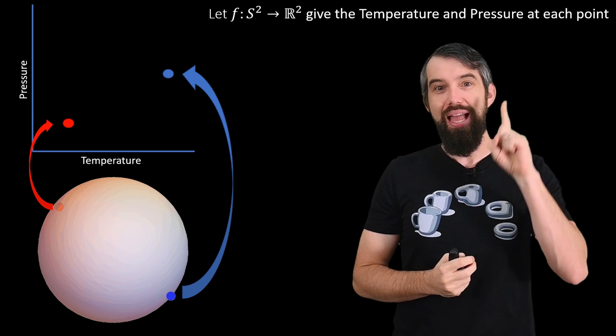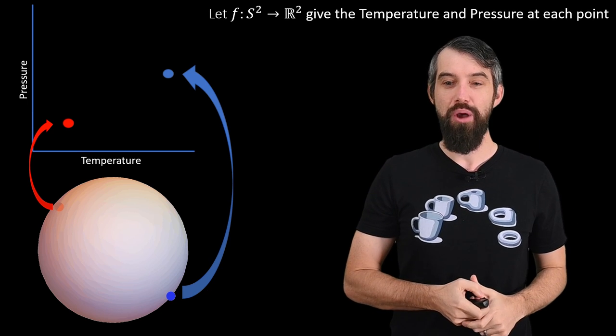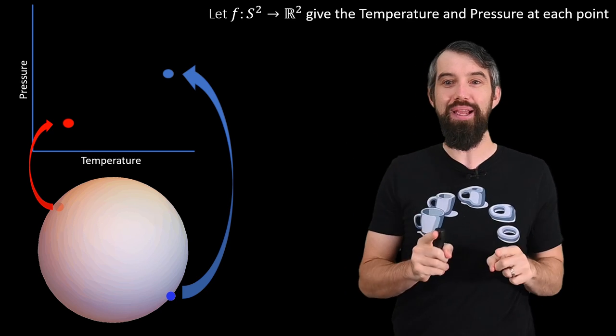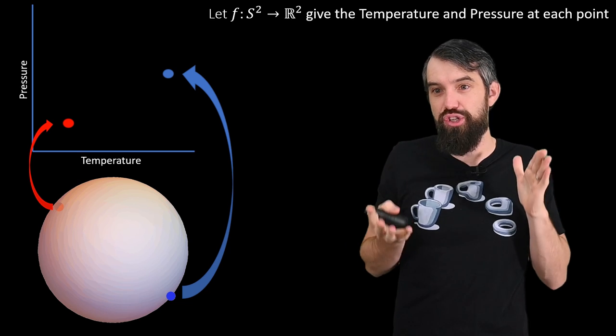is I'm going to tell its temperature and its pressure. I'm going to give a two-dimensional output. That is, we can kind of imagine plotting from these points up into a plot of temperature and pressure, a two-dimensional output.